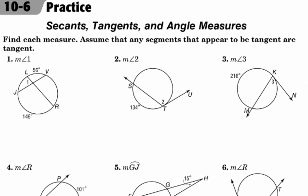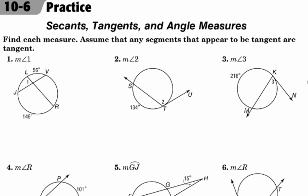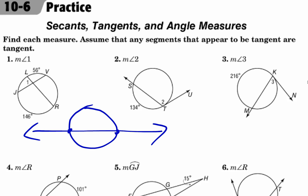We are concerned with angle and arc measures in the circle. There's a new vocabulary word: secants. A secant is a line that intersects a circle twice, compared to a tangent that intersects a circle just once.